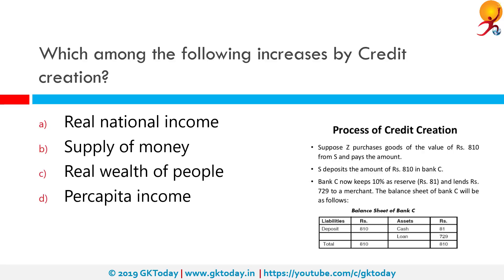Which among the following increases by credit creation? The correct answer is supply of money. Credit creation is a situation in which banks make more loans to consumers and businesses, with the result that the money in circulation, being passed from one person to another, increases. In other words, it refers to the unique power of the banks to multiply loans in advance and hence deposits.